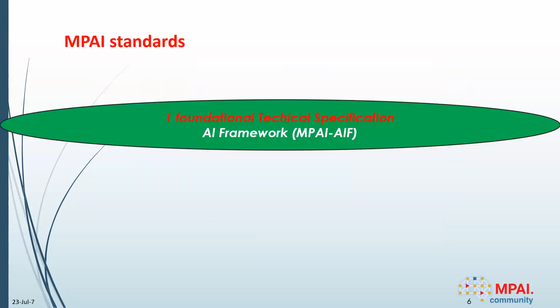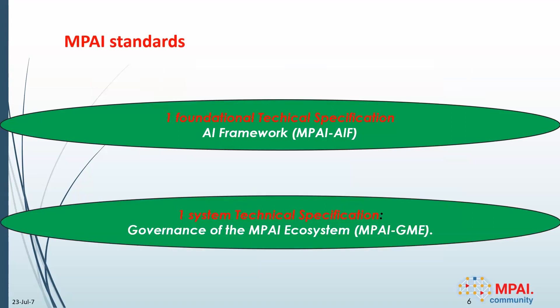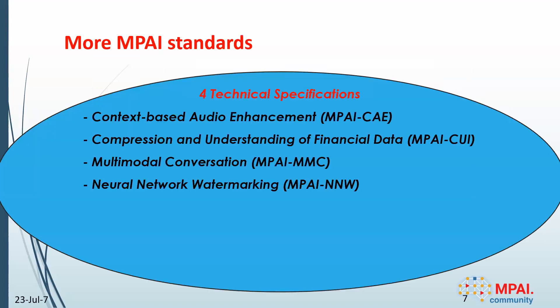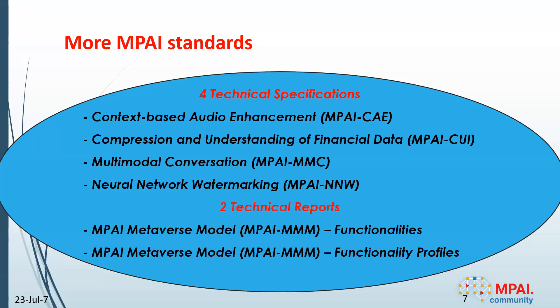In terms of the MPAI standards, we have the first foundational standard — the AI framework — and we also have the governance of the MPAI ecosystem. When you develop standards, you create an ecosystem, and ecosystems need governance. These four standards have been approved by MPAI and adopted by IEEE. The last one is still ongoing, and we also have the MPAI Metaverse model and the second technical report on functionality profiles.